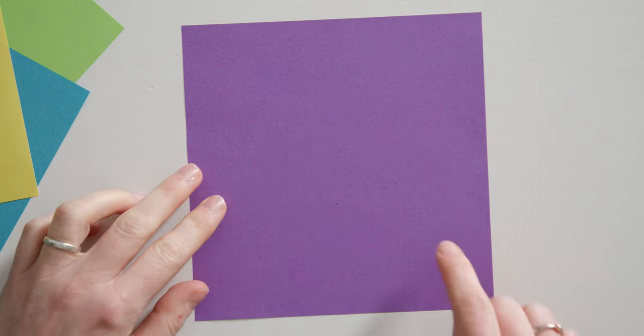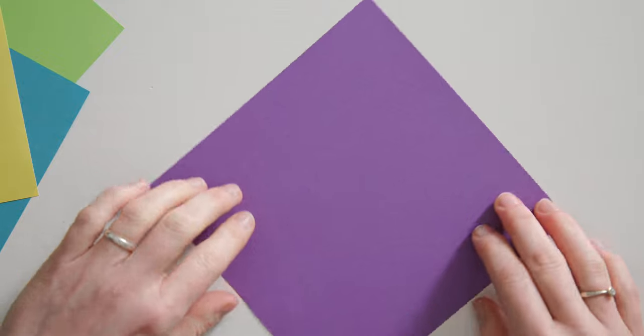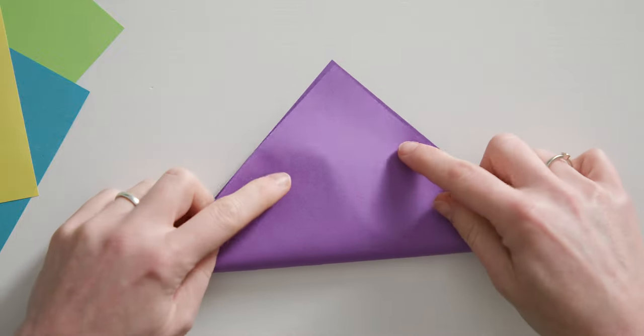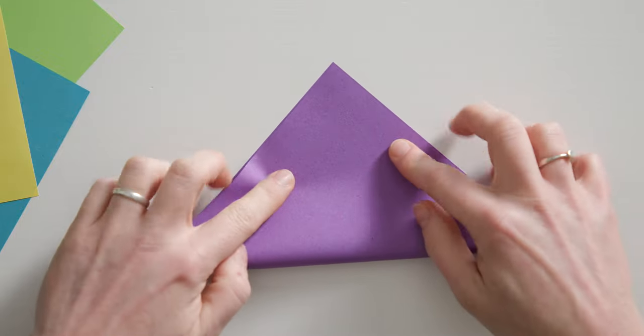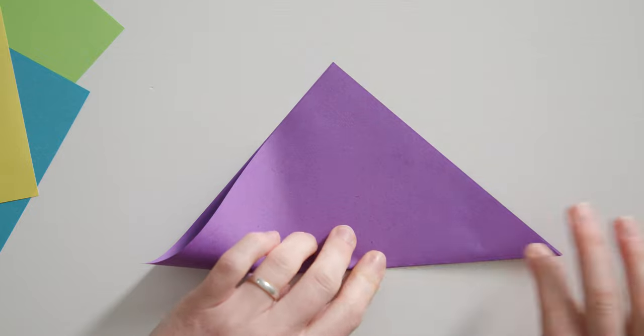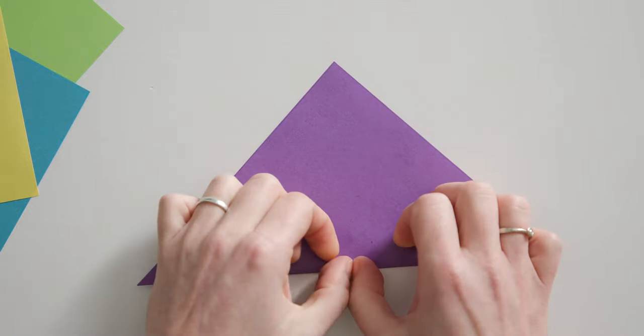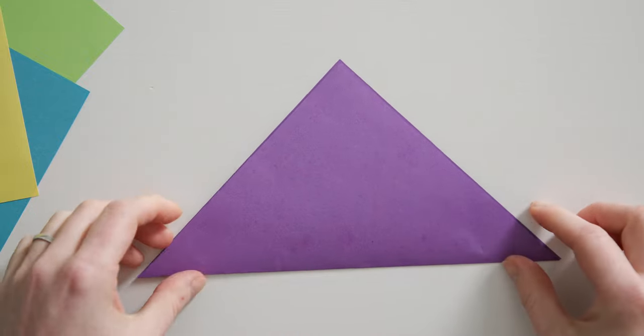First fold one corner to the opposite corner to form a triangle. The envelope will be about half the size of your paper, and at the end you can vary the width quite a bit. Always tighten all folded edges well with your fingernails. Then open the fold again.